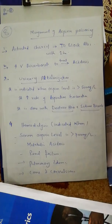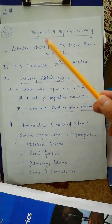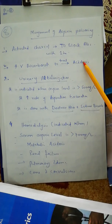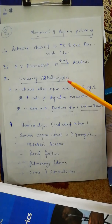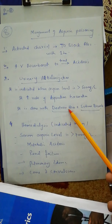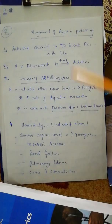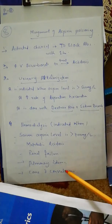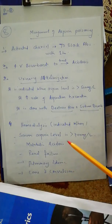Management of aspirin poisoning: first, give activated charcoal to block absorption within the first hour. Second, IV sodium bicarbonate to treat acidosis. Third, urinary alkalinization — because aspirin is acidic, make the urine pH basic to facilitate excretion; indicated when aspirin level is more than 500 mg per litre, done with dextrose water plus sodium bicarbonate. Fourth, hemodialysis — indicated when serum aspirin level is more than 700 mg per litre, or in case of metabolic acidosis, renal failure, pulmonary edema, coma, or convulsions.